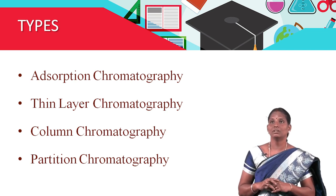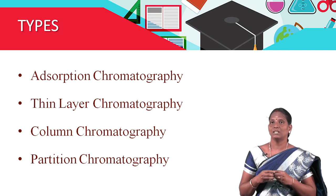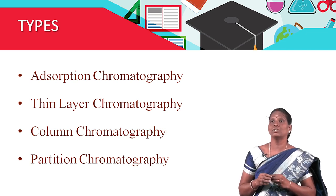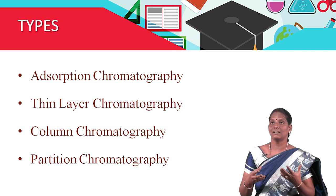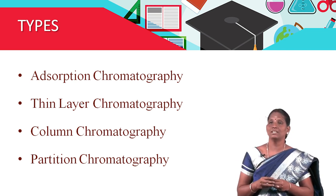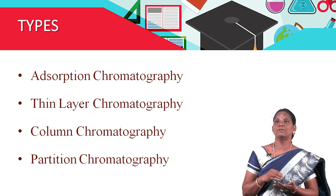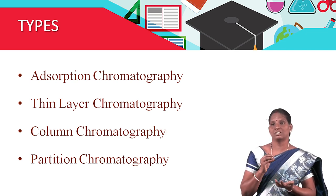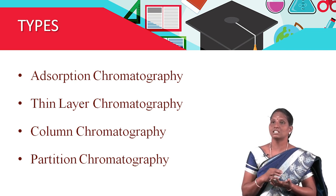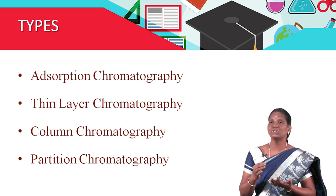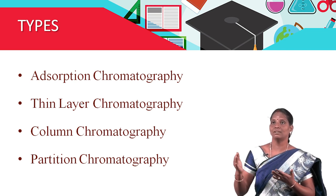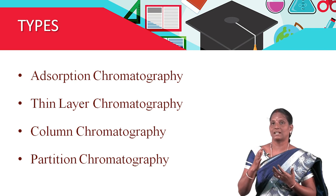Next is partition chromatography. In this process, a continuous differential partitioning of components of a mixture into a stationary phase and a mobile phase takes place. The example of partition chromatography is paper chromatography. In paper chromatography, paper is used as a stationary phase, which is suspended in a mixture of solvent that acts as the mobile phase.